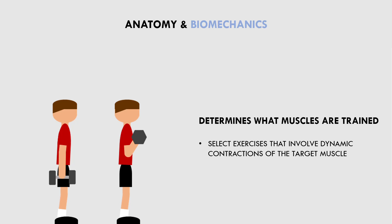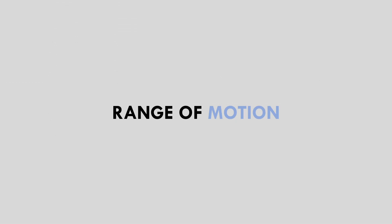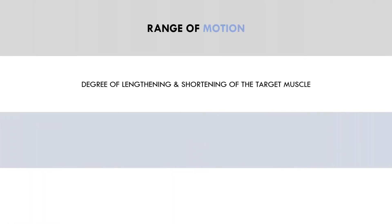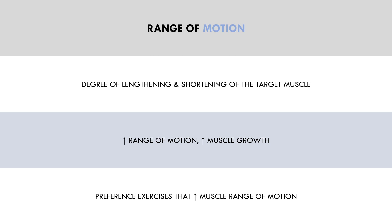The next consideration for the hypertrophic stimulus of the exercise is range of motion. This refers to the degree of lengthening and shortening of fibres of the target muscle. Generally speaking, greater range of motion usually results in more muscle growth per set. Even if two exercises train the same general muscle groups, one exercise may take the muscle through a larger range of motion than the other. Therefore trainees should prefer exercises which train the muscle through a larger range of motion, in consideration with all other factors too.